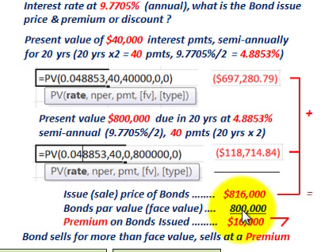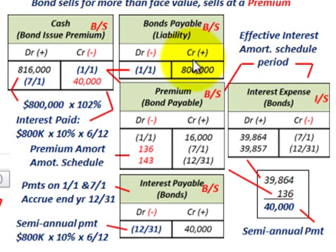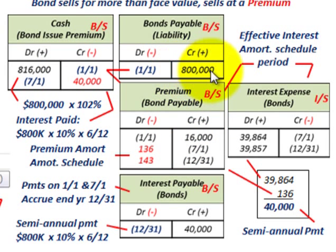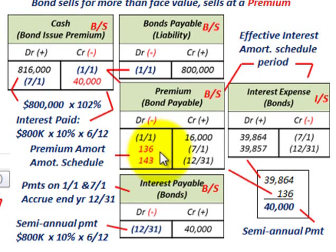Had the sales price been less than the face value, the difference would be a discount. Let's look at recording this bond. When issued, we debit cash for $816,000, credit bonds payable for $800,000 on the balance sheet, and set up the premium of $16,000 as a credit. For the first period, we had $136 of premium amortization. So the $40,000 cash payment reduced by the $136 amortization gives us $39,864 as interest expense for the first period.